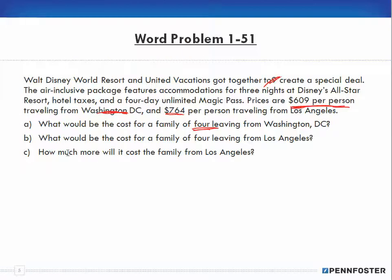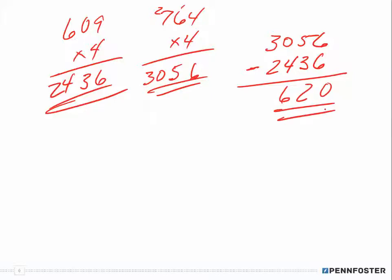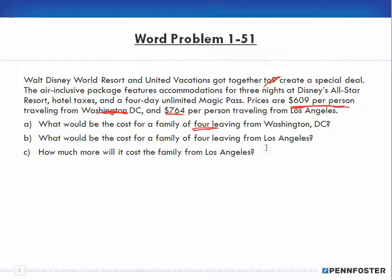Part C: how much more will it cost a family from Los Angeles? Since Los Angeles is more expensive, that's $3056 minus $2436 from Washington D.C. The difference is $620 more, which is how much it would cost to go from Los Angeles versus Washington D.C. I'm going to end the video here and I will pick it up with one dash 53 in the next video.